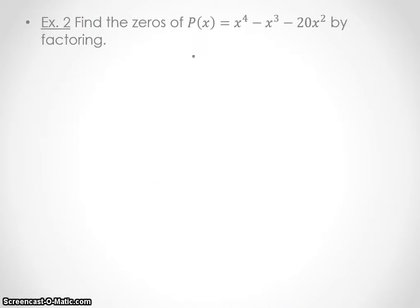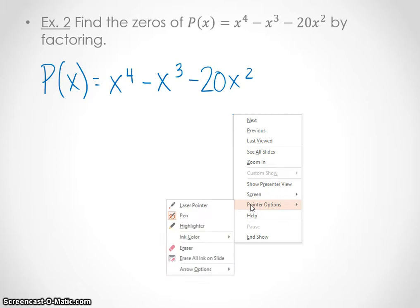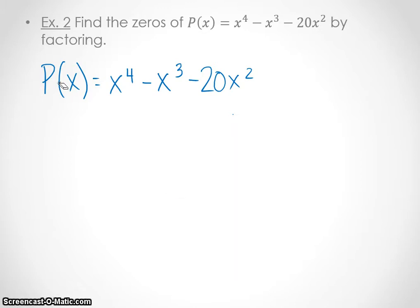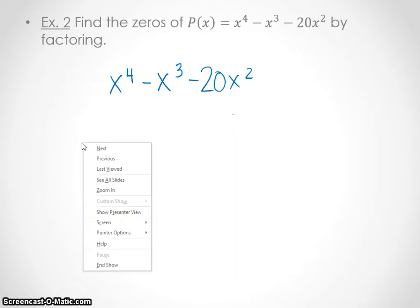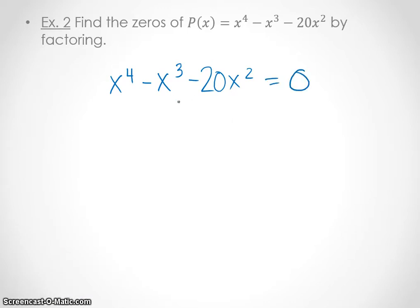Example 2, let's find the zeros of P(x) equals x to the 4th minus x cubed minus 20x squared by factoring. So let's go ahead and do that. P(x) equals x to the 4th power minus x cubed minus 20x squared. So essentially the first step in doing this is to get rid of that P(x) equals, and we actually want to set this thing equal to 0. And you can put 0 in the front or the back. I like it in the back, so that's where I'm going to put it. So you set it equal to 0, and then we need to factor this side.